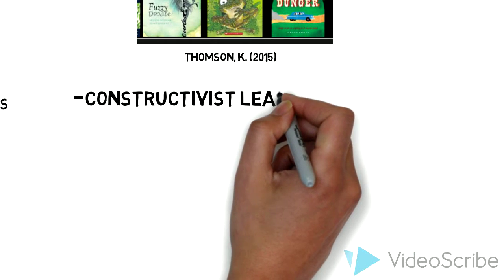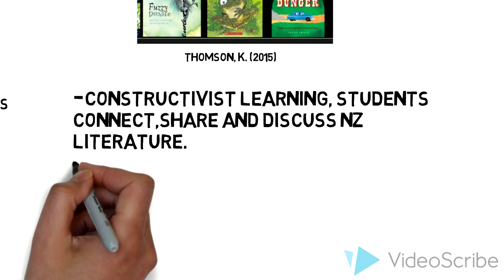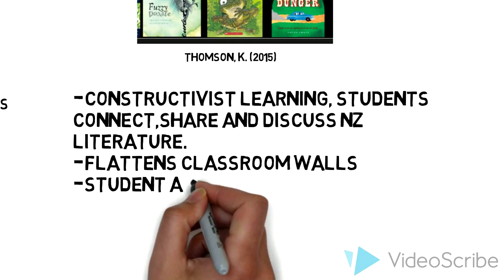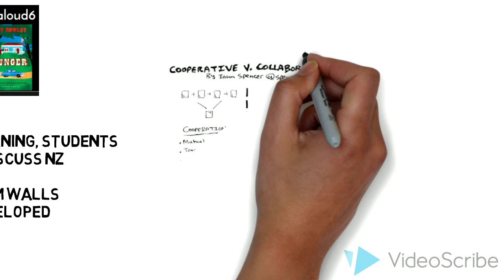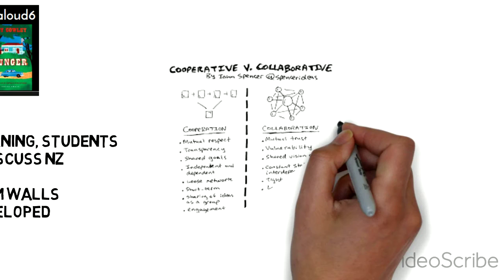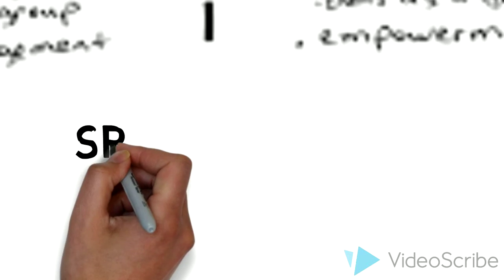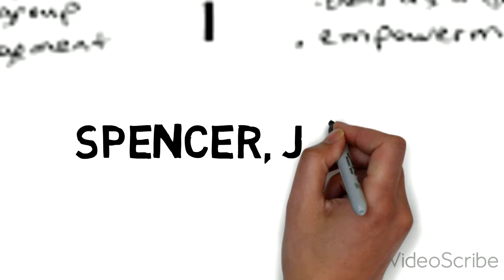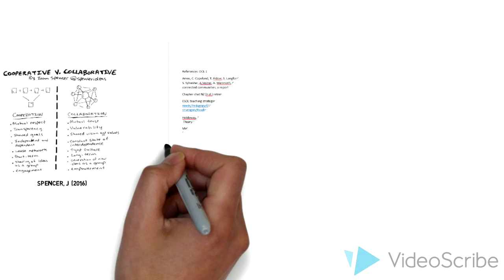The students' work is interdependent and they share responsibility for completion and content of the tasks, and so it meets the ITL criteria for collaboration and it works for my program. If I look at John Spencer's graphic which shows the difference between cooperative learning and collaborative learning, I can see New Zealand Read Aloud could be either. And so to push it towards collaborative learning, I'll need to develop tasks that build a shared vision, shared values, and a state of interdependence.